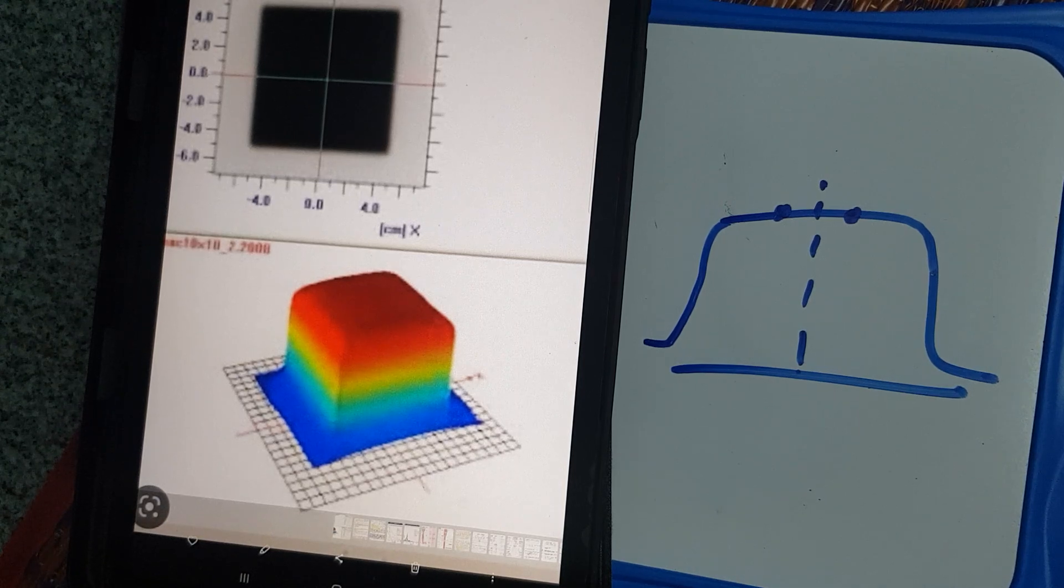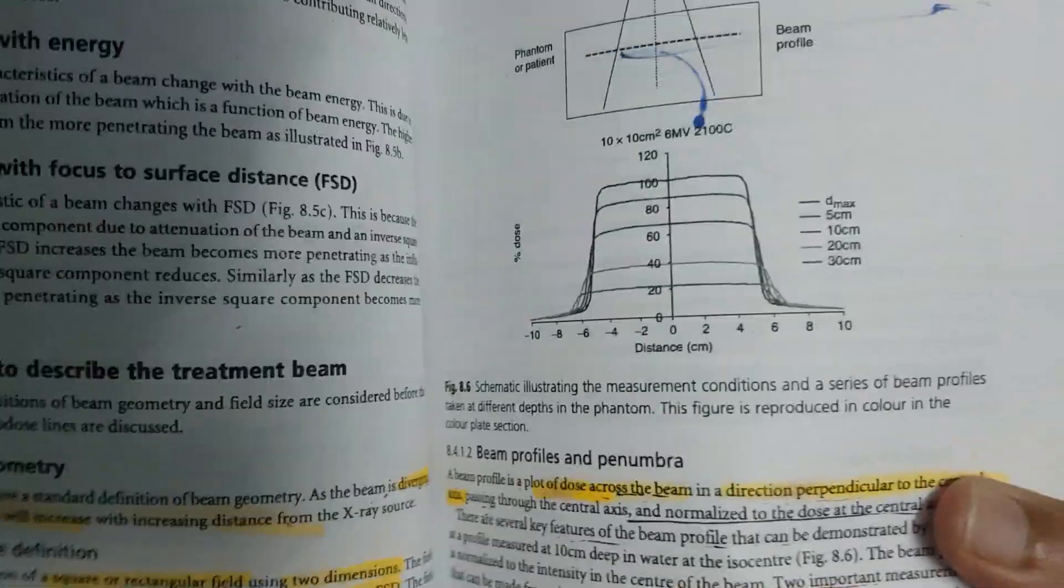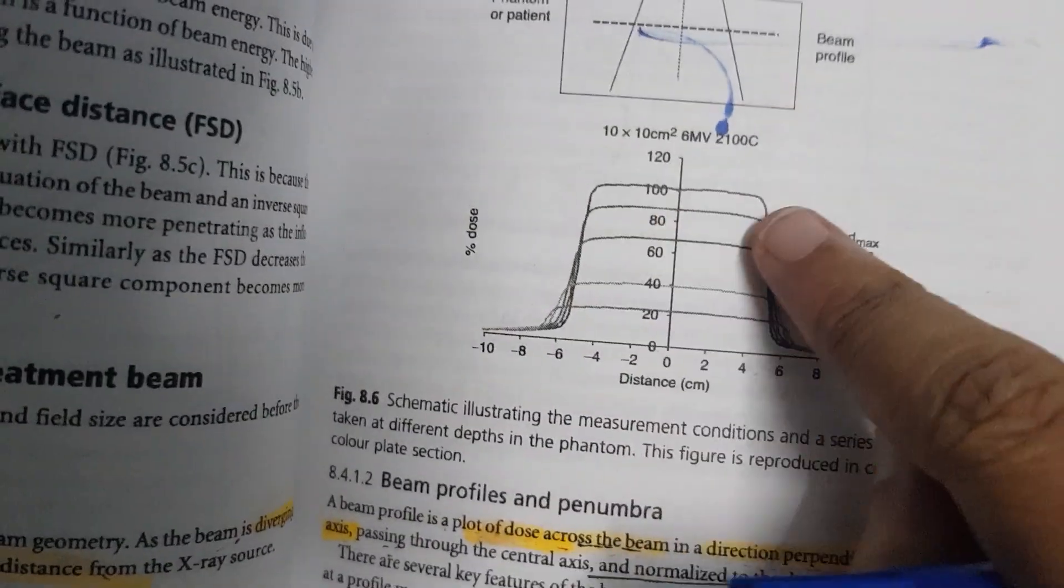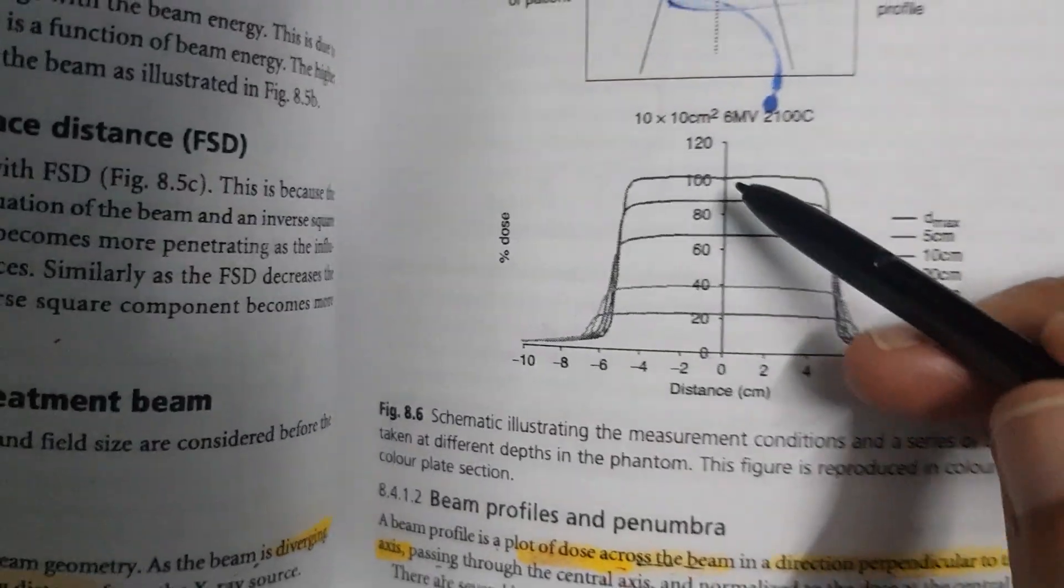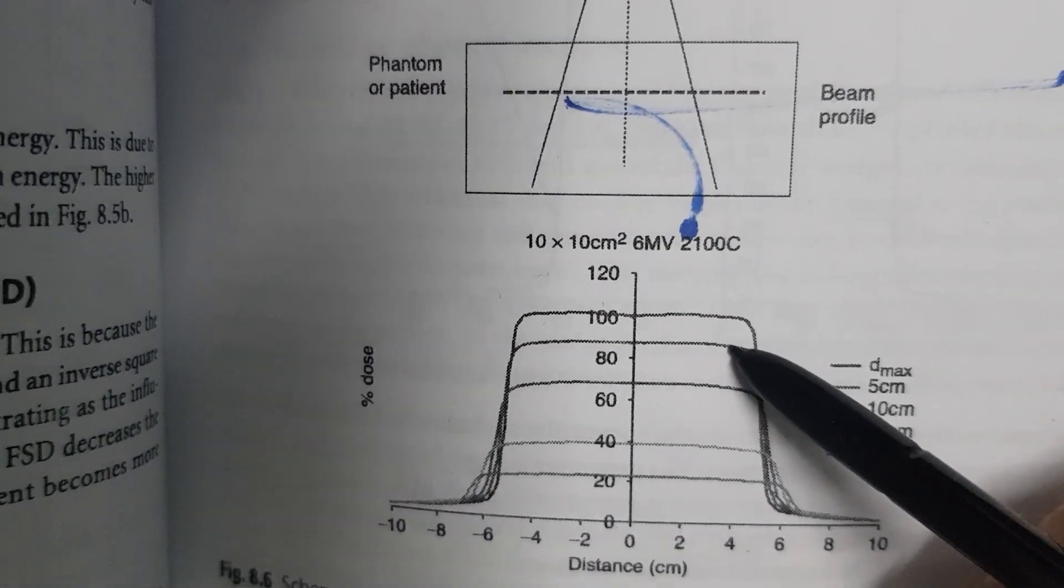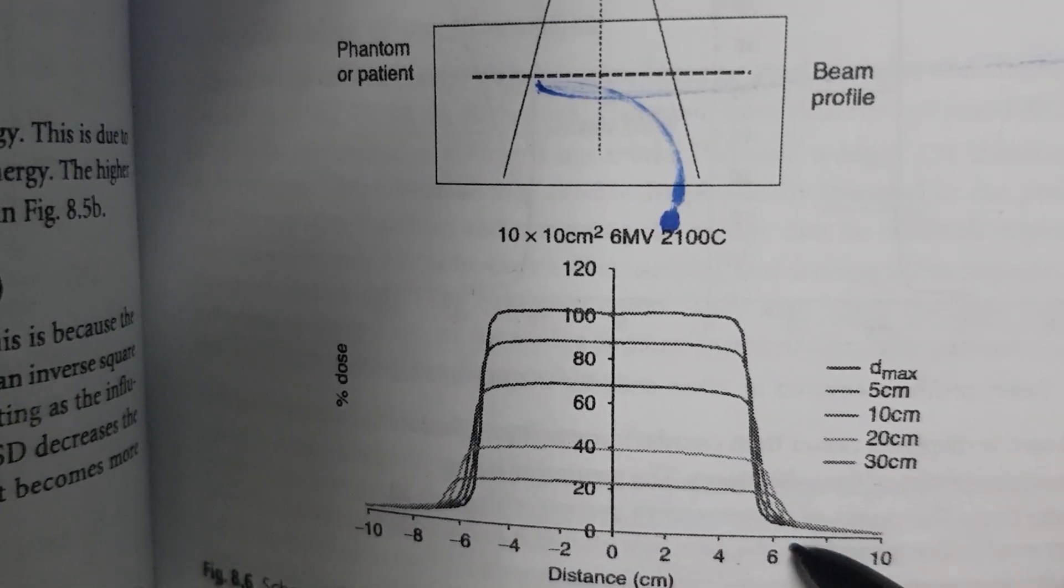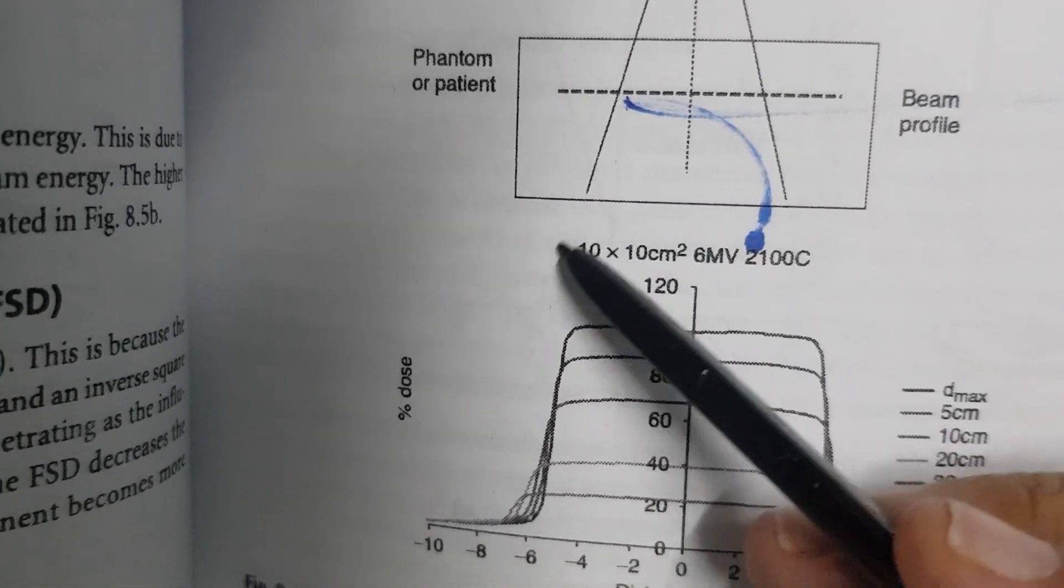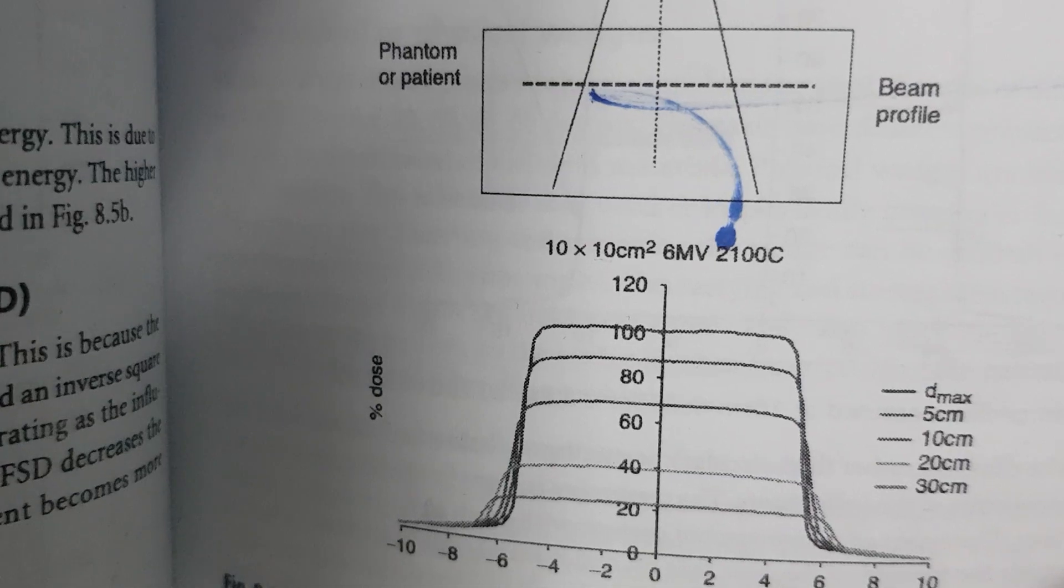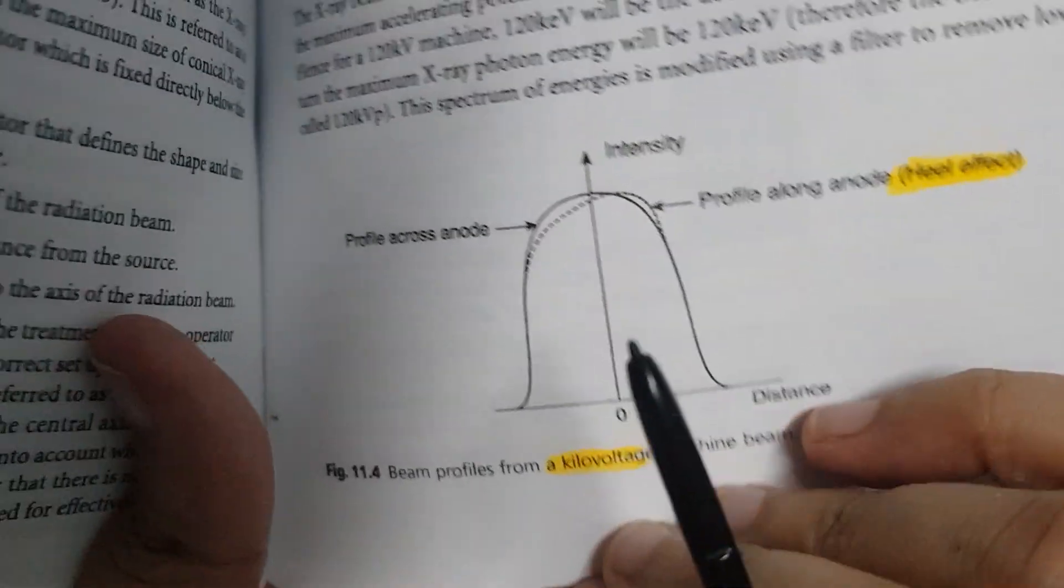If you take this as an example, here if you take this is at the Dmax level, then this is at 5 centimeter depth, then this is at 10 centimeters, this is at 20, this is at 30 centimeters. That's the beam profile, and this is for a field of 10 into 10 centimeters for a 6 MV linac.